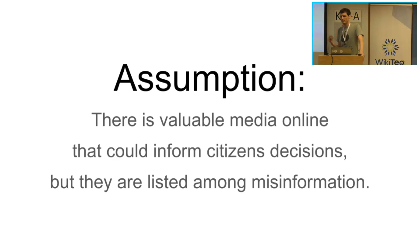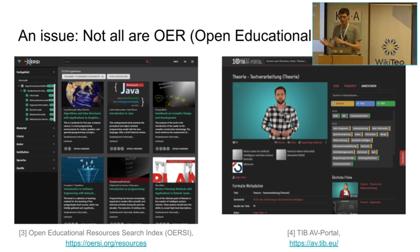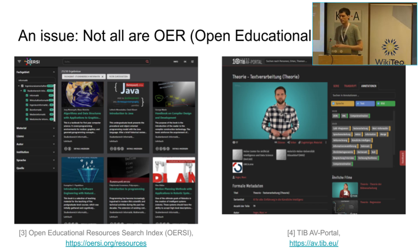The assumption is there's valuable media online that could inform citizens, but they are listed among misinformation. Another issue: not all science videos are open educational resources. I would consider the problem of open educational resources somewhat solved — there's the Open Educational Research Search Index, something like the TIB AV-Portal, all of those are solved. But I don't think that the video of that two-hour guy would be listed as an open educational resource. So how do we connect the one with the other?